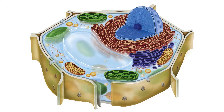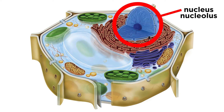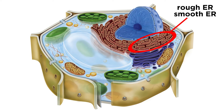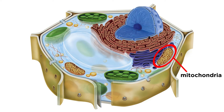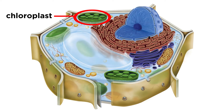Looking at the cell as a whole, we see the familiar nucleus and nucleolus, extending to the rough and smooth ER that we are familiar with. We also see the Golgi apparatus and mitochondria, but in addition we see a new organelle, the chloroplast.